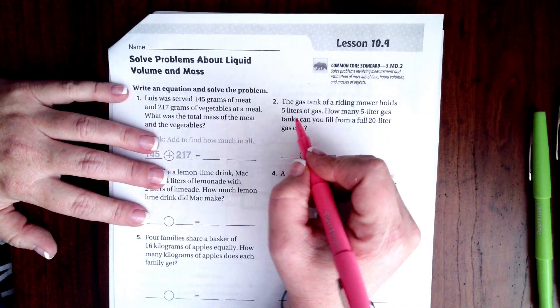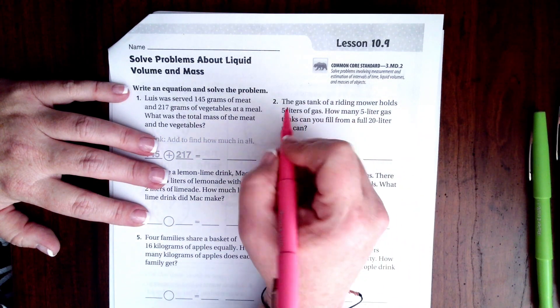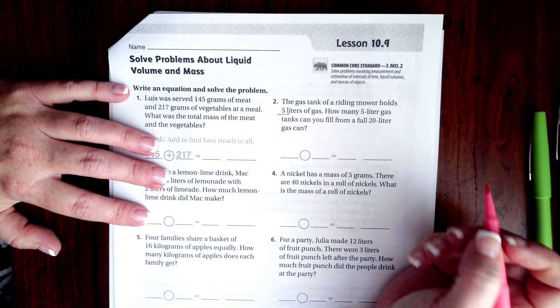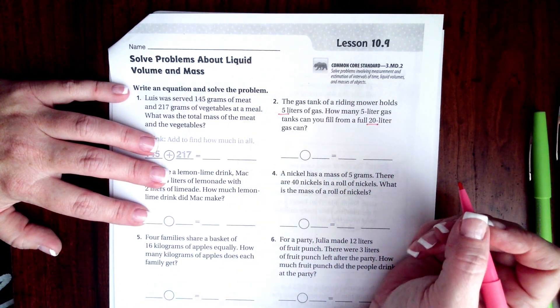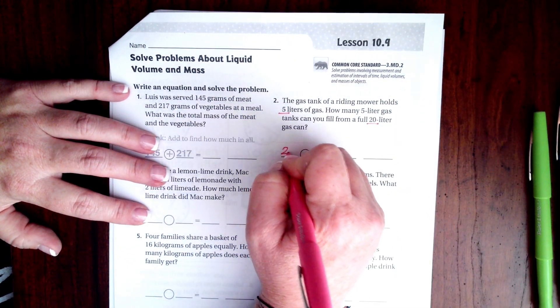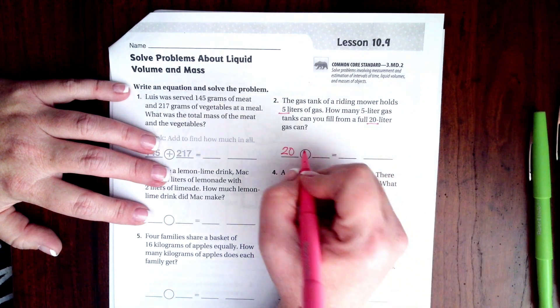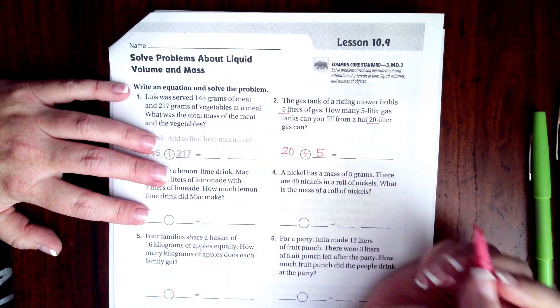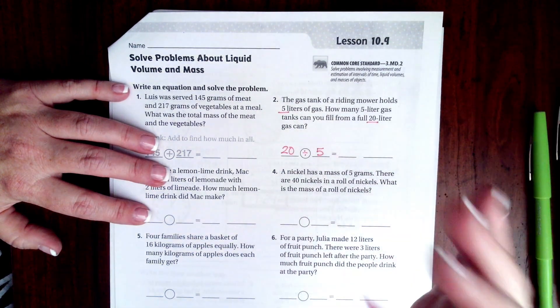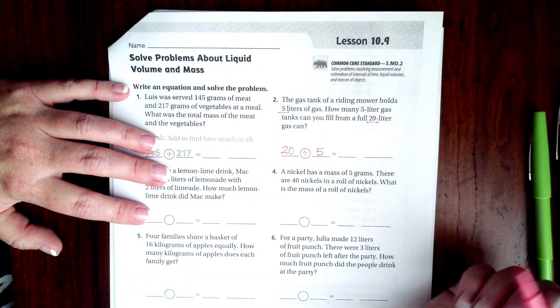We're going to go ahead and go over to number 2 and it says the gas tank of a riding mower holds 5 liters of gas. How many 5 liter gas tanks can you fill from a 20 liter gas can? So we're going to put that 20 here.